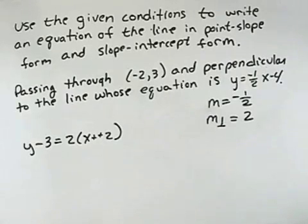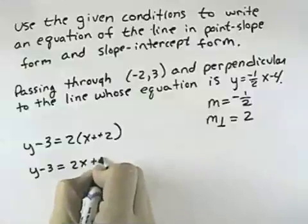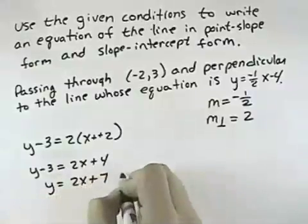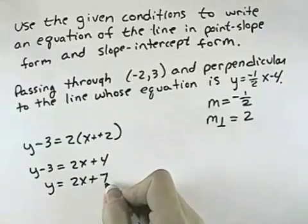To get slope-intercept form, we want to solve for y. So multiplying out the right-hand side, we'd have 2x + 4. And adding 3 to both sides, we'd have y = 2x + 7. This would be the form in slope-intercept form of the same line.